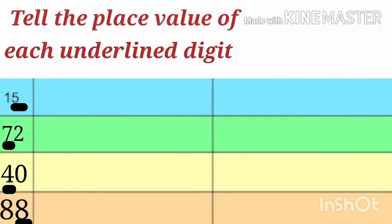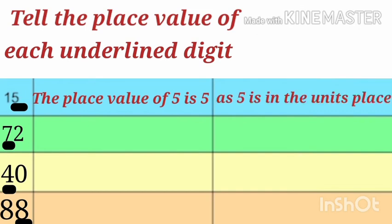Now, you have to tell the place value of each underlined digit. And the first number given is 15. And the digit underlined is 5. So, the place value of 5 is 5. Do you know why? As 5 is in the units place.